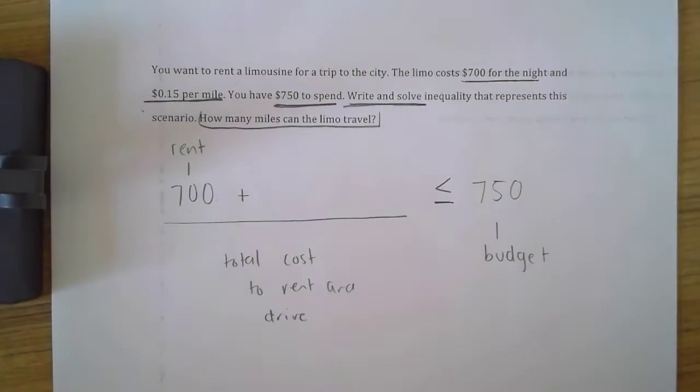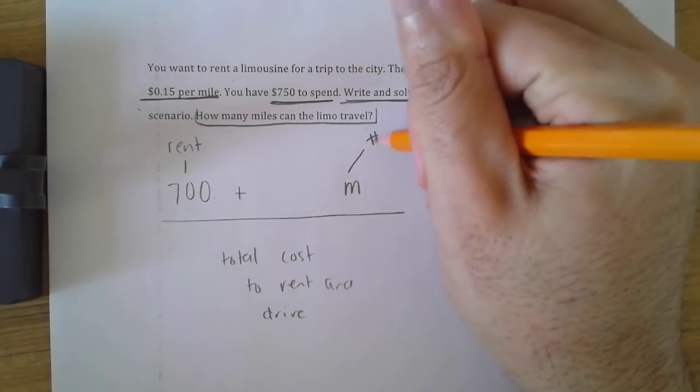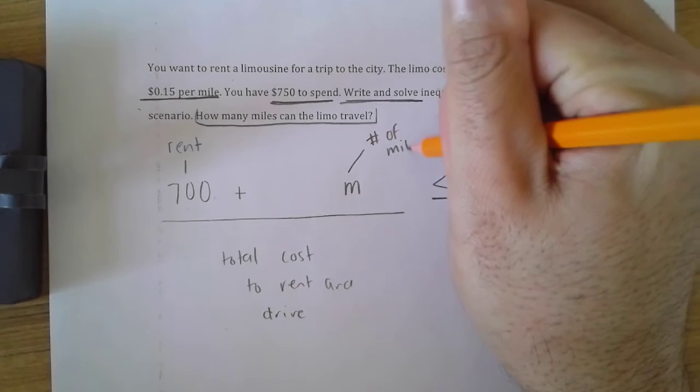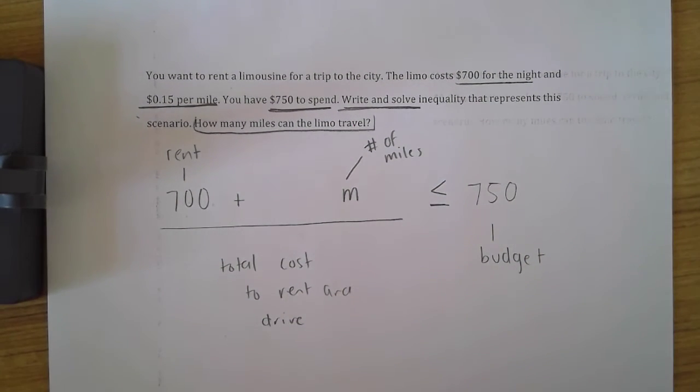My question is asking me for my number of miles. That is going to be my variable. M is going to represent my number of miles, but I can't just add 700 plus M because then that would mean that M is less than or equal to 50. And I know that that's not what I'm looking for. I can travel a lot more than 50 miles because it does not cost me a dollar per mile.